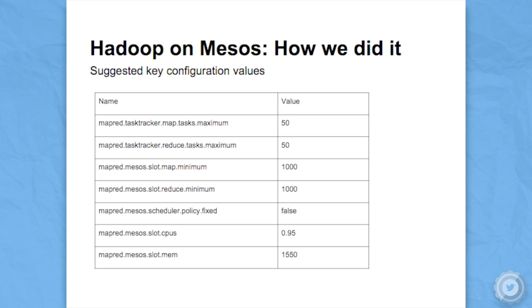Just for the sake of completeness, I've included some sample configuration values we use. Some of these are new for Mesos on Hadoop and some aren't. Some important ones are like these minimum slot specifications, which allow you to provide a sort of guarantee of slot availability for your Hadoop cluster.